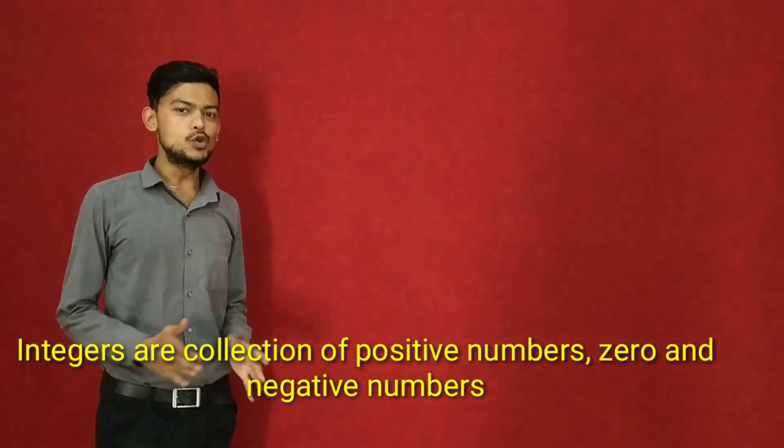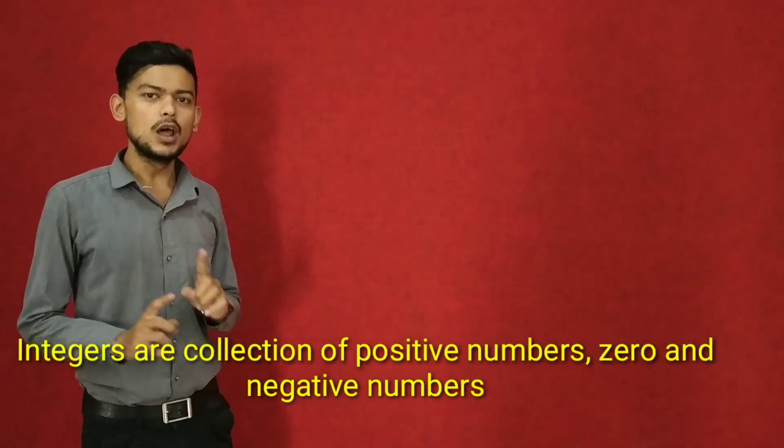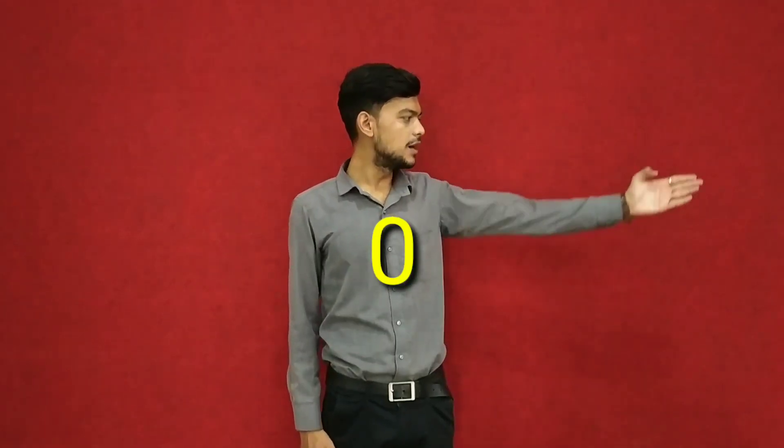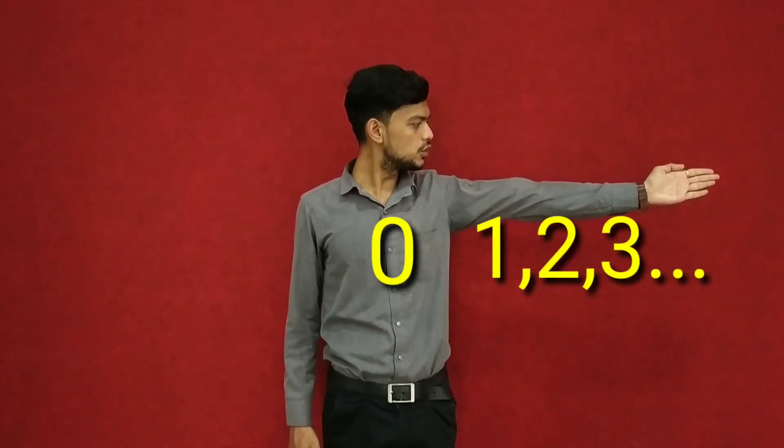Now we will learn how to represent numbers on the number line. On the center on the number line, which is 0. On your right hand side, positive numbers are 1, 2, 3, up to 7.